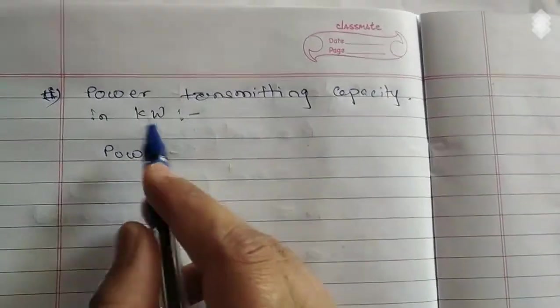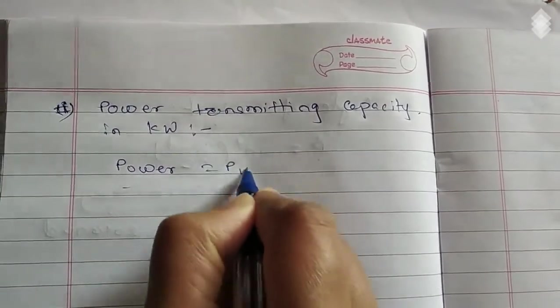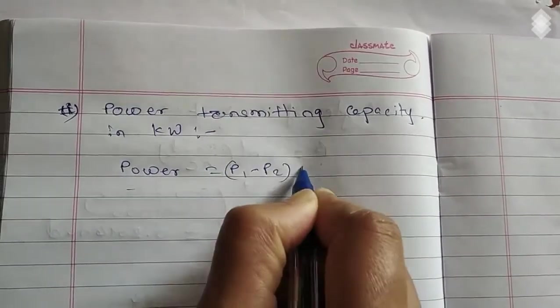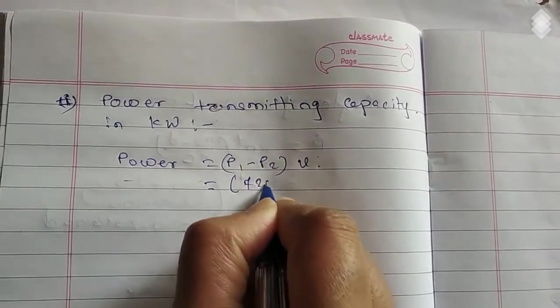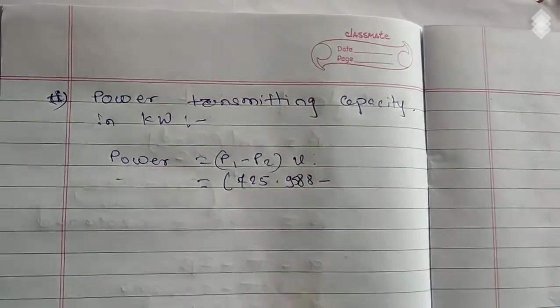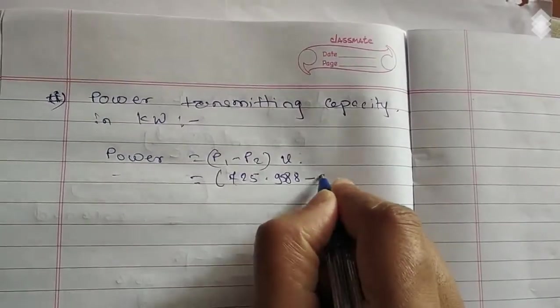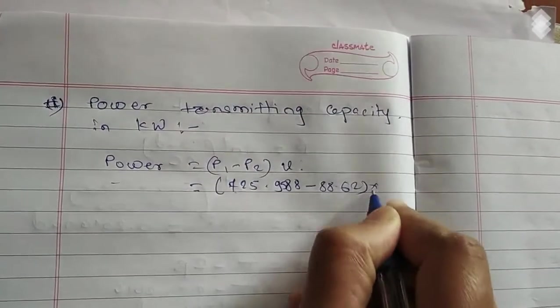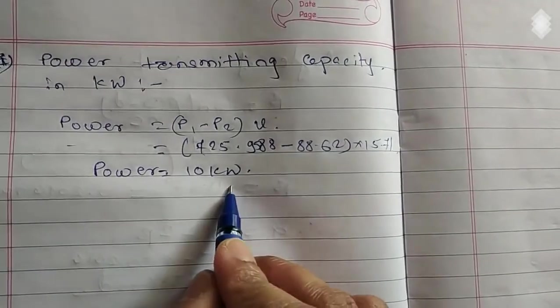So now we can calculate power transmitting capacity. So power equals P1 minus P2 times v. V is the velocity. P1 we know, 725.9588 minus P2 is 88.62. Velocity is 15.71. It is equal to 10 kilowatt.